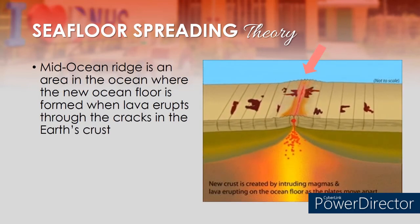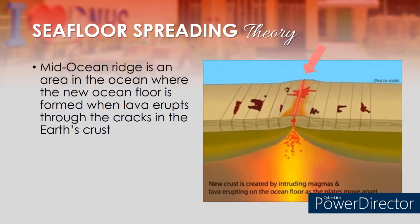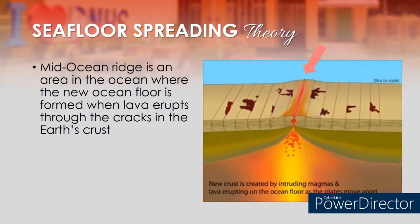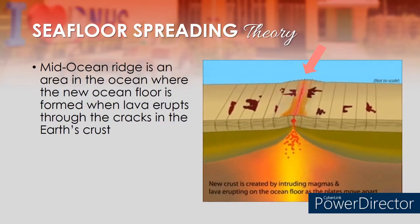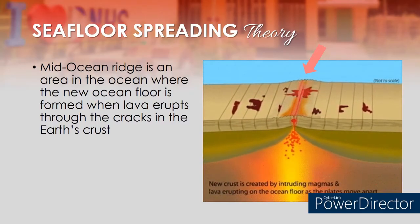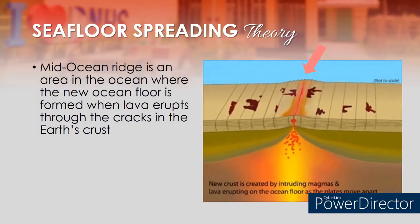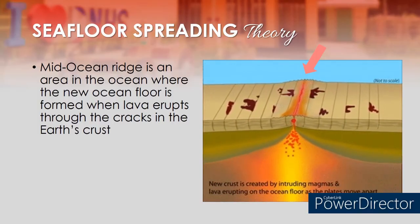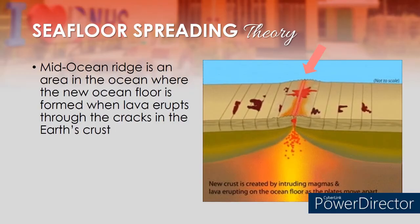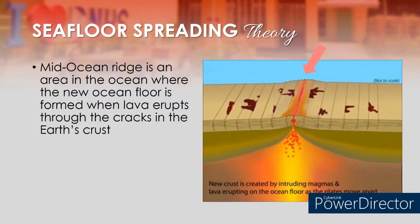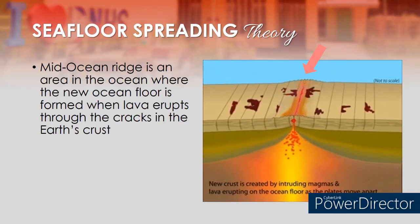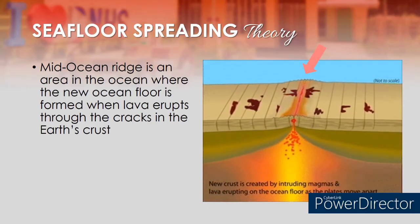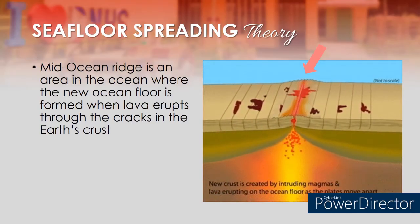As you learned in the previous module, a mid-ocean ridge is an area in the ocean where new ocean floor is formed when lava erupts through the crack in the Earth's crust — it forms between divergent plate boundaries. As the plates move away from each other, lava seeps into the crack between the plates and solidifies, creating a new seafloor.